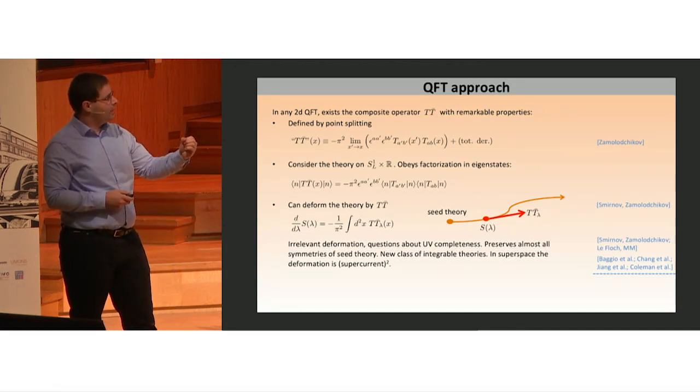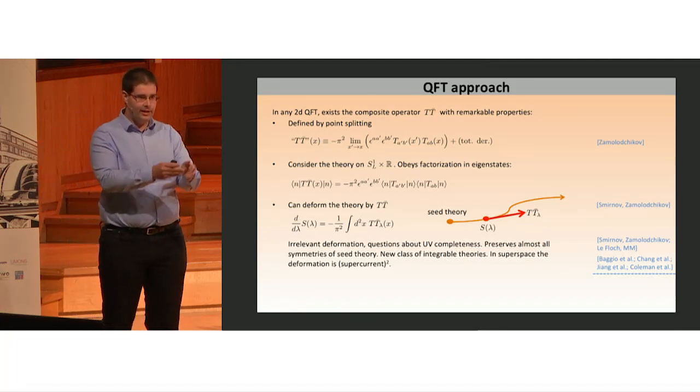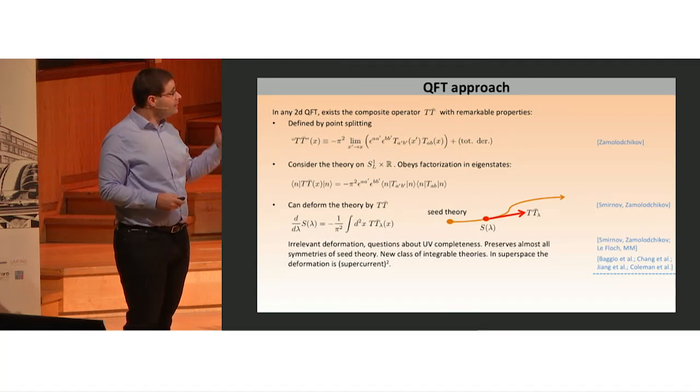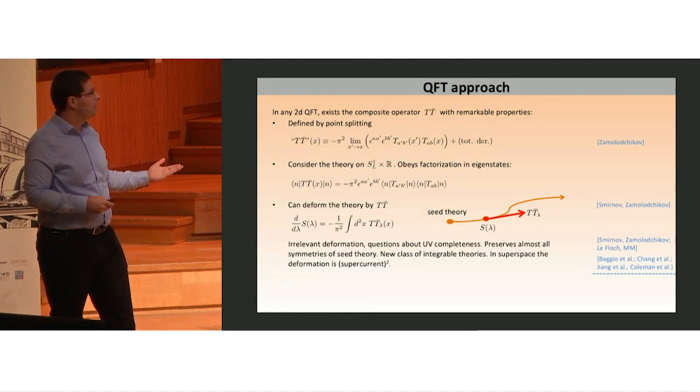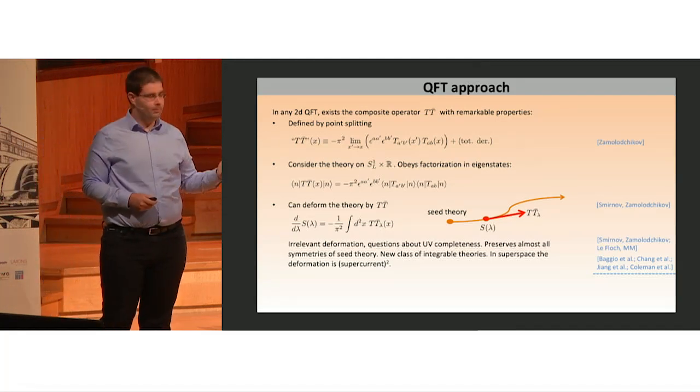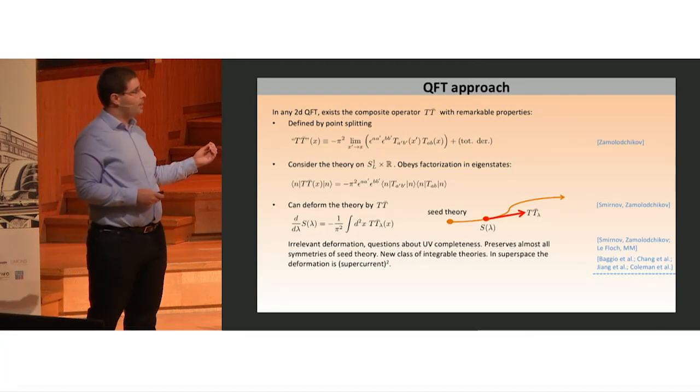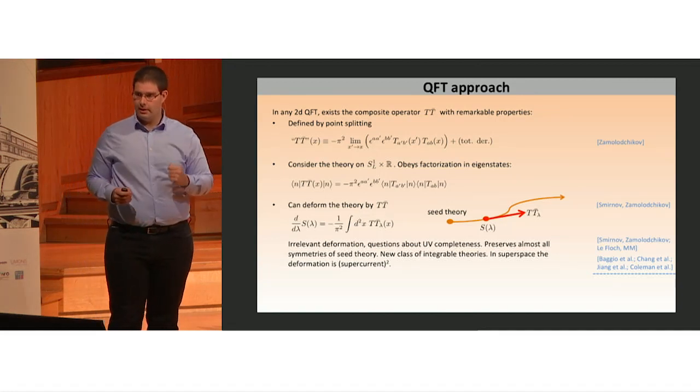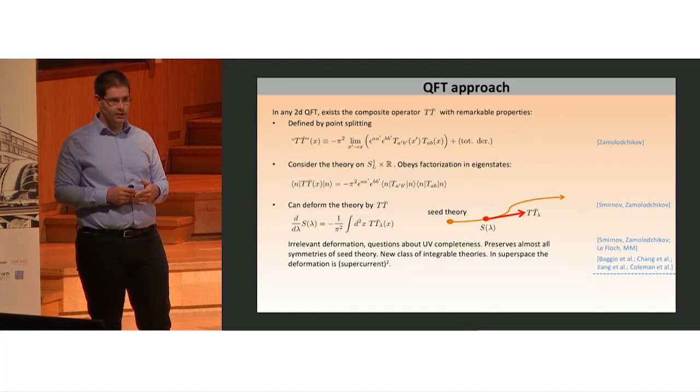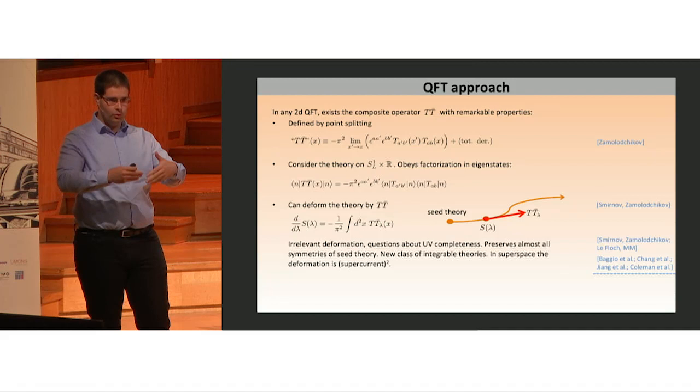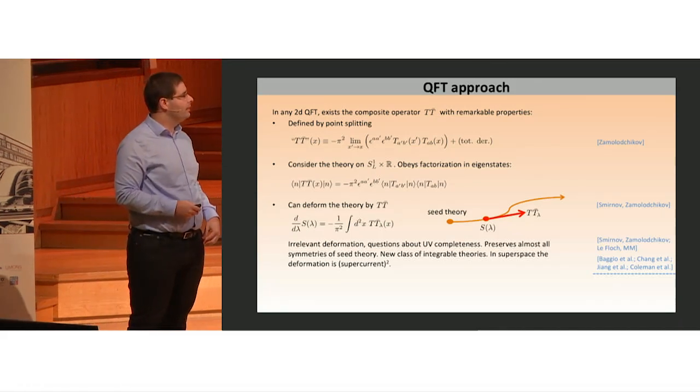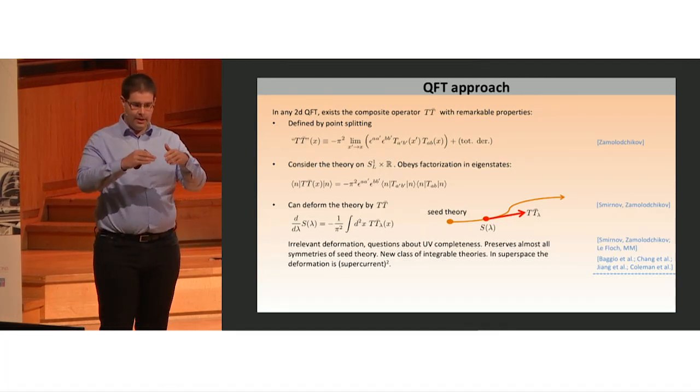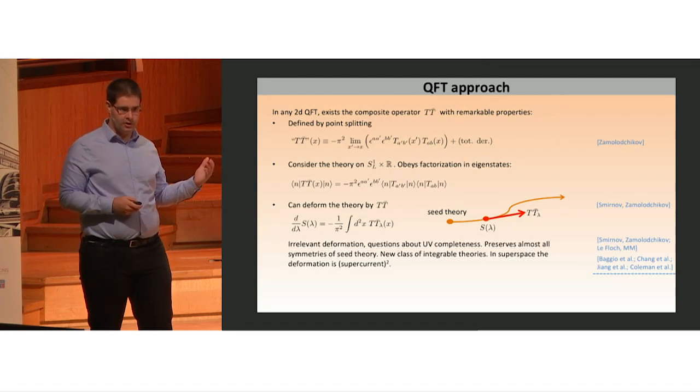One consequence is that the TT-bar deformed Lagrangian is not simply TT-bar added to the seed theory Lagrangian with a finite coefficient, it's more complicated. This is an irrelevant double-trace deformation and naturally questions about UV completeness arise. But one nice property is that it preserves almost all the symmetries of the seed theory. In particular, if the starting theory was integrable, the deformed theory remains integrable, enlarging the known space of integrable theories by quite a lot. It also preserves supersymmetry.